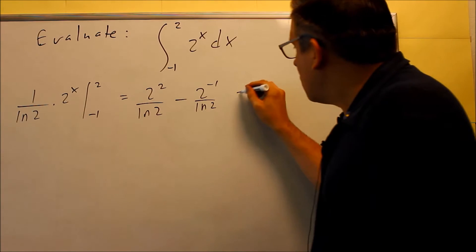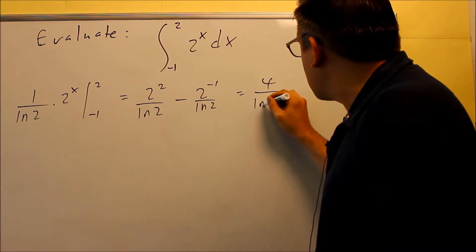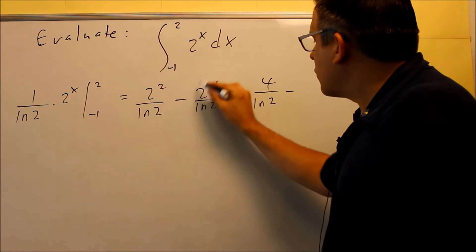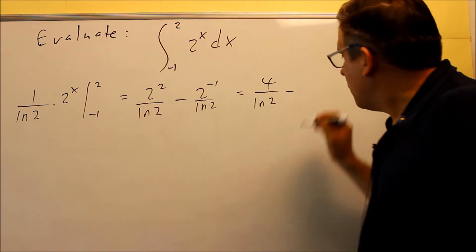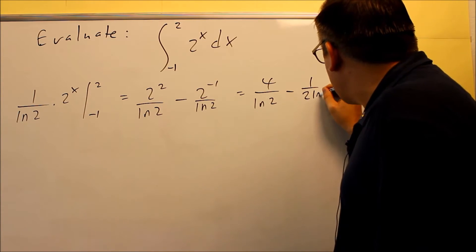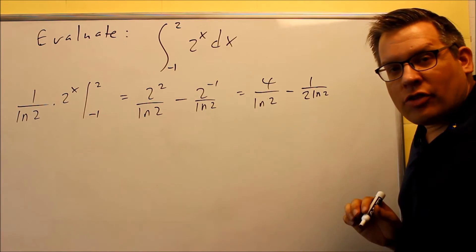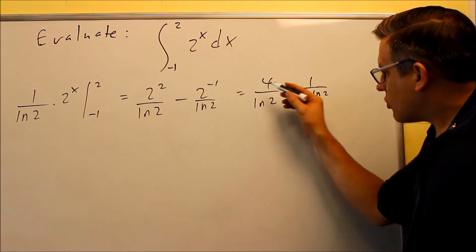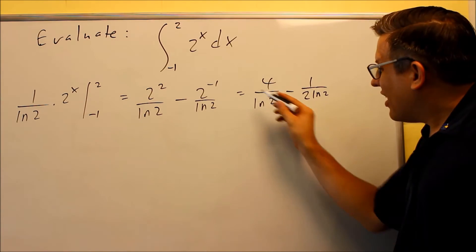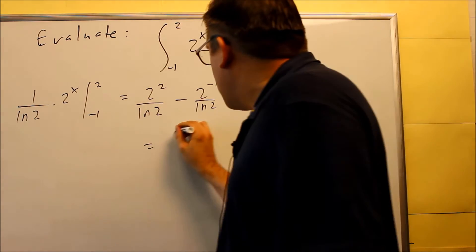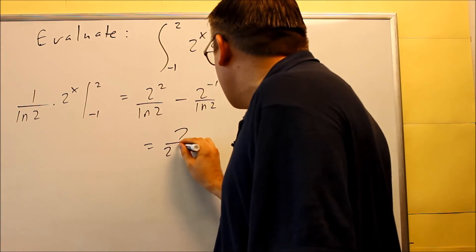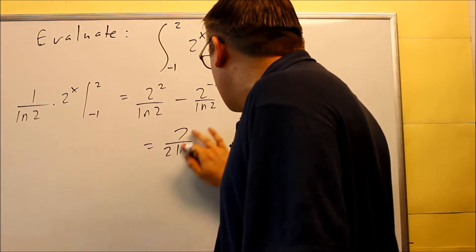So we're going to simplify this. You get 4 on top over natural log of 2. This 2 here I'm going to put on the bottom. So I have 1 over 2 natural log of 2. And you could leave it like that. Or if you'd like to get some common numbers, you can do that as well. If I multiply top and bottom by 2, then I get 8 minus 1, which means I could also write this as 7 over 2 natural log of 2.